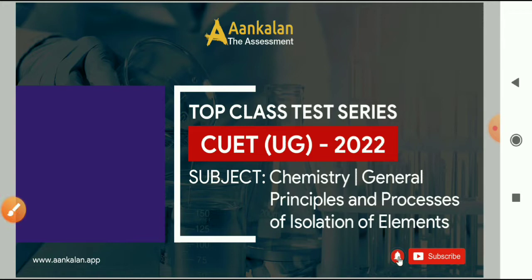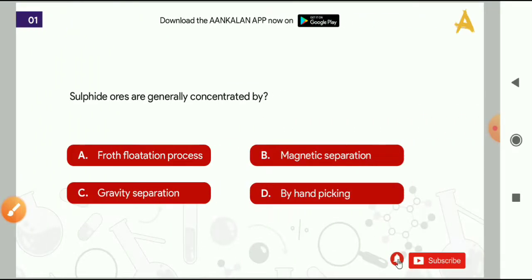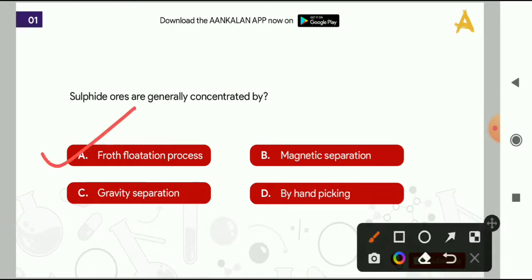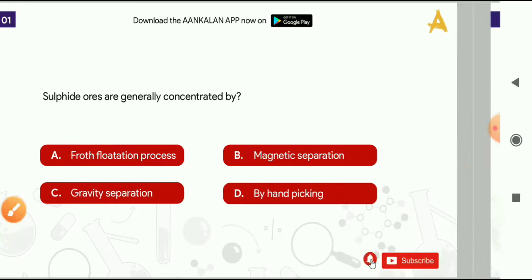Let's start our test series. The first question is: sulphide ores are generally concentrated by? Options are: froth flotation process, magnetic separation, gravity separation, and by hand picking. The correct answer is option A, that is froth flotation process.